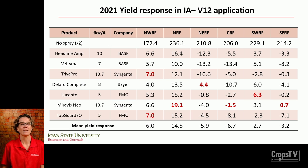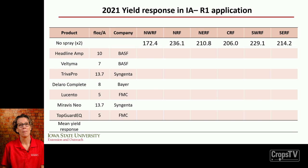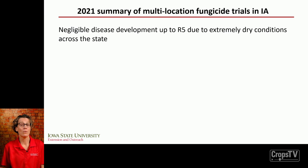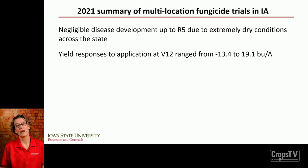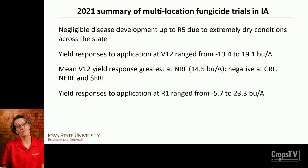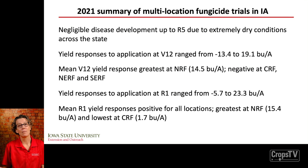For the R1 application, we had positive yield responses at all locations. Yield responses ranged from negative 13.4 to 19.1 bushels with the V12 application, and from negative 6 to 23.3 bushels with the R1 application. Responses were greatest at Kanawha and lowest here in central Iowa. No fungicide had a consistent yield response across all farms. We had negligible disease development at R5 due to the extremely dry conditions across the state.